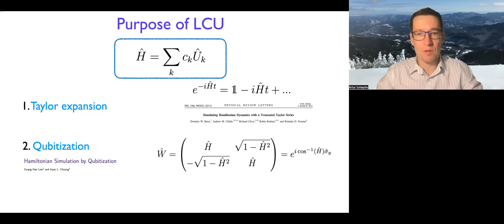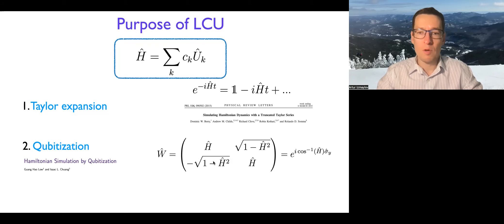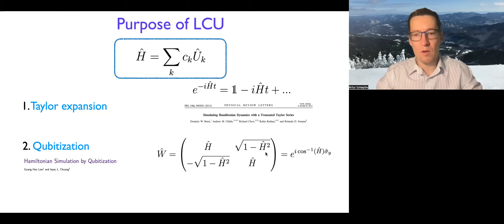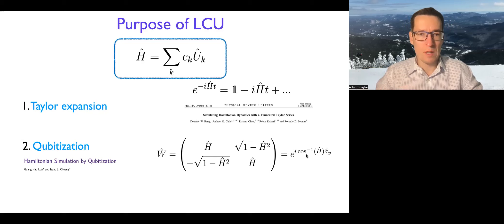A more sophisticated approach that also uses LCU is qubitization. The idea is that you can use LCU to encode a walker operator, and that walker operator is unitary. You can extract its phase, and the phase of this walker operator will be related to the eigenstates and eigen energies of the Hamiltonian, so you can get the eigen spectrum. This is just to motivate why LCU is needed.